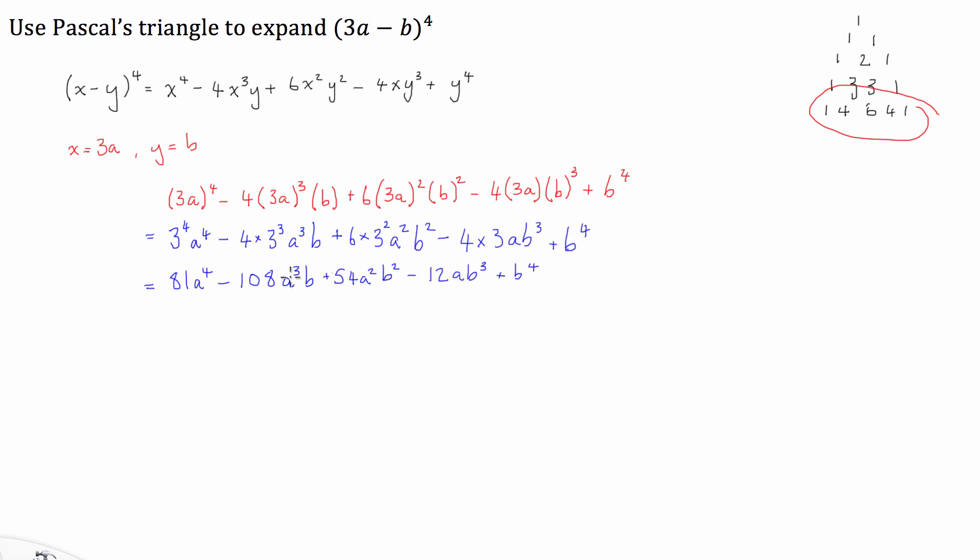So what we have here is we have a binomial expansion for a quartic function and we've used Pascal's triangle to get us the coefficients in front of each of the terms and then we've used those coefficients to finally solve the total expansion. Thanks, I hope that helped, I'll see you again next time.